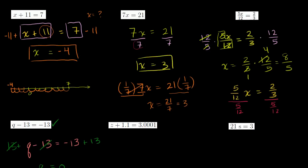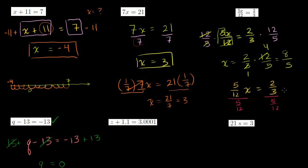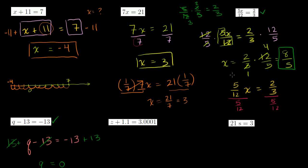Let's also check the x equals 8 fifths answer. The fun thing about algebra is you can always check your answer. So: 5 over 12 times 8 over 5 — the 5's cancel, divide 8 by 4 to get 2, divide 12 by 4 to get 3 — equals 2 thirds. We can verify that's correct.